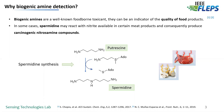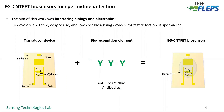Even though there are commercial techniques like chromatography and ELISA that enable the detection of these compounds, a fast detection technique is heavily needed. Therefore, the aim of this work was to interface biology and electronics in order to develop a label-free, easy-to-use, and low-cost biosensing device for fast detection of spermidine.